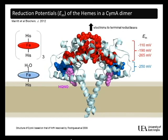A model for the structure of SimA shows four hemes that are positioned to move electrons from the quinol oxidation site, here occupied by the analogue HQNO, to the region of the protein where terminal reductases will bind to receive electrons.